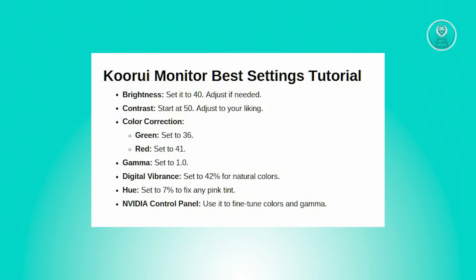Next, you want to access the NVIDIA Control Panel. Restoring defaults here is pretty easy. Right-click on the desktop and select NVIDIA Control Panel from the context menu. In the NVIDIA Control Panel, go to Adjust Desktop Color Settings from the menu on the left. Look for the Restore Defaults button or option and click it to reset all color settings to their default values.